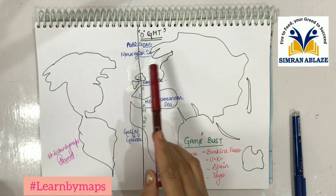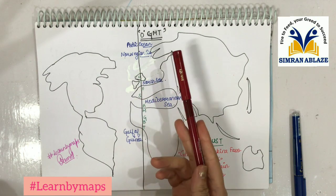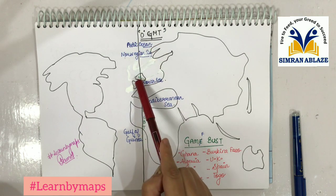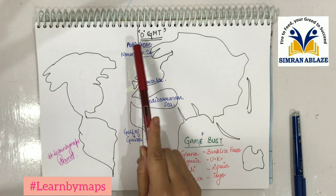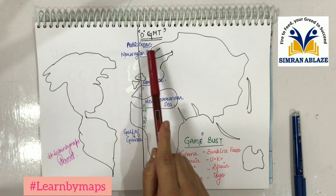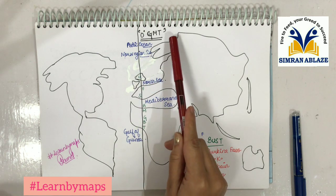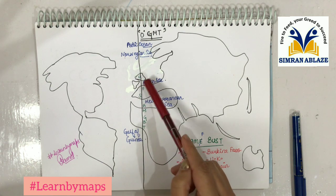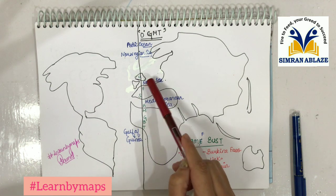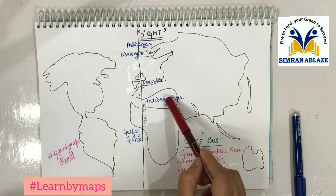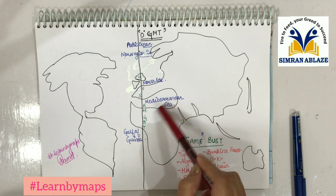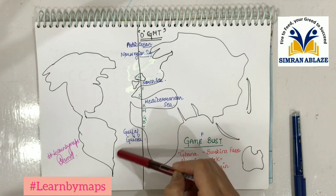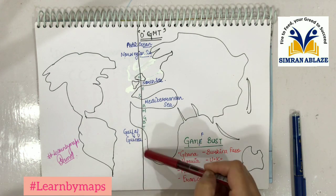UPSC has asked which oceans cross the Prime Meridian. We have three oceans: the first is the Arctic Ocean, the second is the Norwegian Sea — because Norway is a country here — and then we have the UK region, North Sea, Mediterranean Sea, Gulf of Guinea, and the Atlantic Ocean.